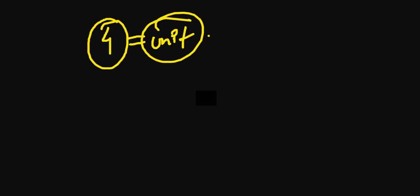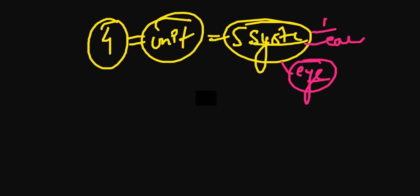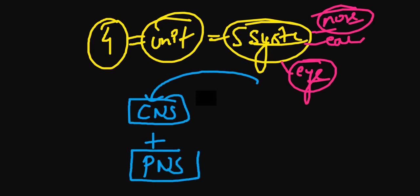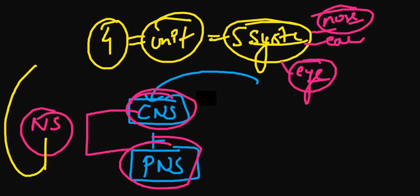In unit number four's sensory system section we discussed the eye, ear, nose, and haptic touch perception, then we dove into CNS and PNS. CNS plus PNS always makes your nervous system, and the nervous system is made up of billions and trillions of neurons.